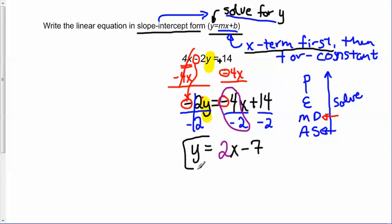And so here's my linear equation in slope-intercept form. We have the y equals mx plus b. And here we could see that m, my value for m, would be 2.